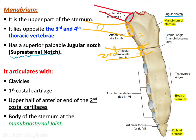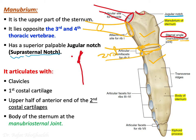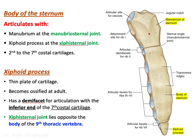The manubrium articulates with the body of the sternum at a very important joint called the manubriosternal joint. We also refer to this as the sternal angle. Looking at the sternum laterally, you can see the angle formed between the manubrium and the body of the sternum — this is the sternal angle, a very important landmark.